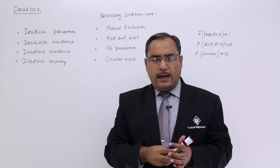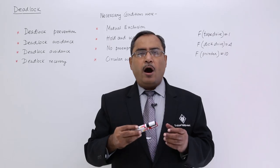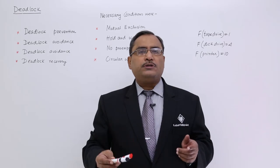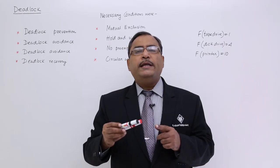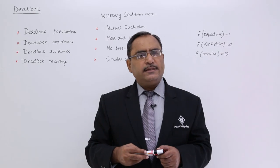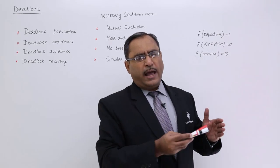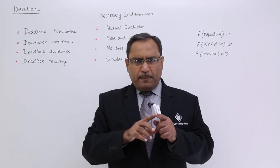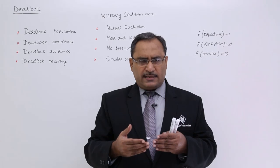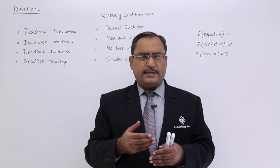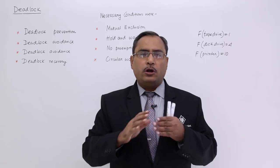Deadlock avoidance requires having a prior database — how many resources are there, how many instances per resource, how many processes are there, which process will require which resources and for how many instances, how many instances are remaining available, and how many instances per resource have already been allocated. If we have this particular database in advance, then resource allocation to processes can be done in such a way that the deadlock situation will not occur.